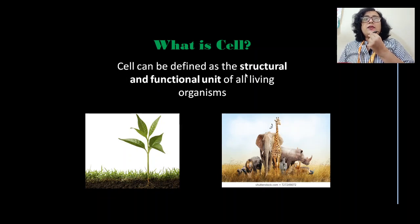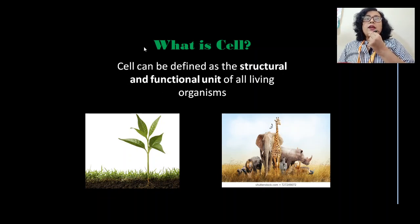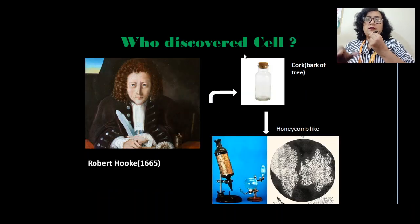So, cell can be defined as a structural unit because it gives shape and size to the organism depending on arrangement. It is also the functional unit because all functions of living organisms — whether physical or biochemical, inside or outside the body — are controlled by the cell. Hence, cell is defined as the structural and functional unit of living organisms. Now, the second question is: who discovered the cell?